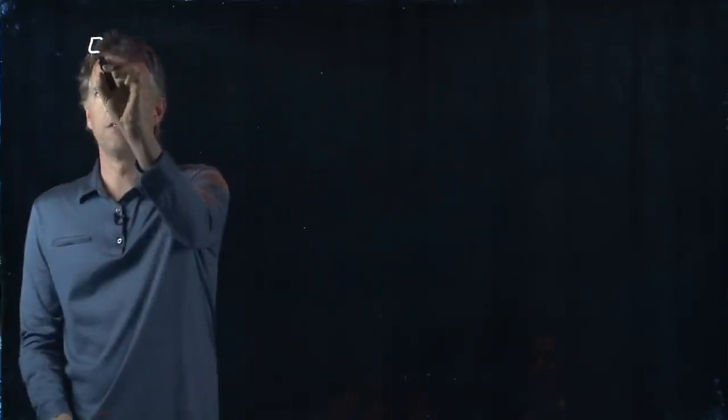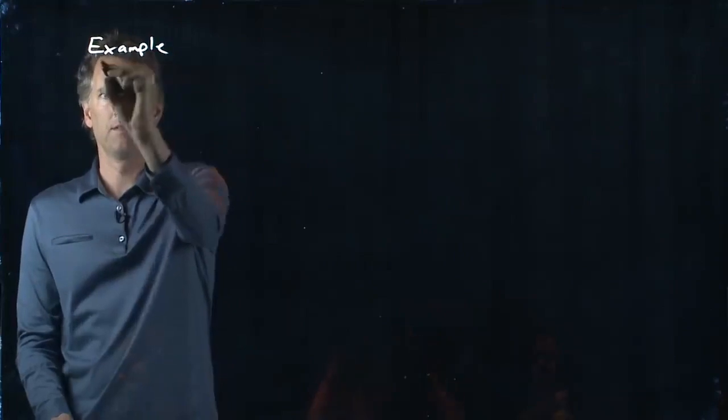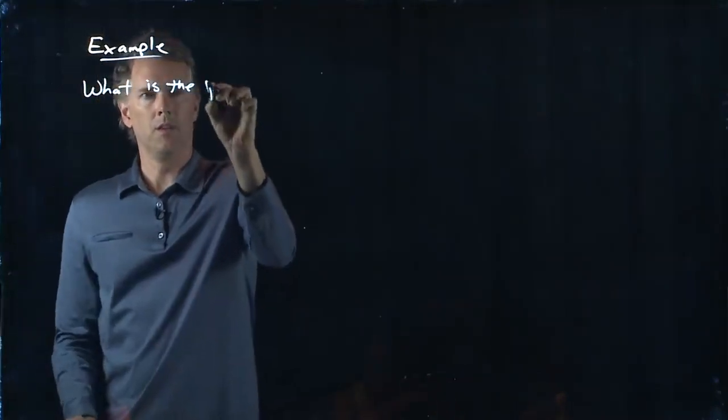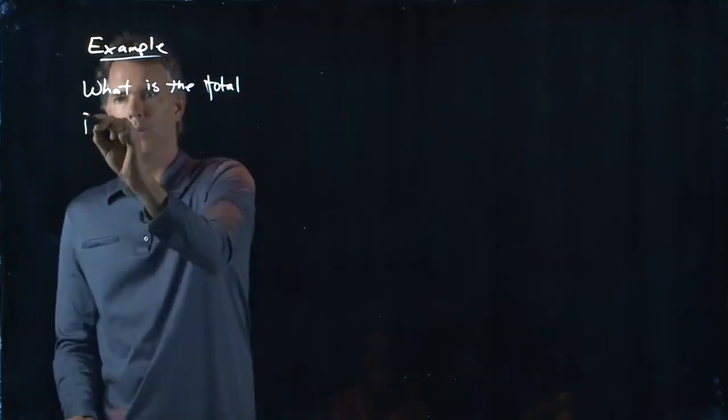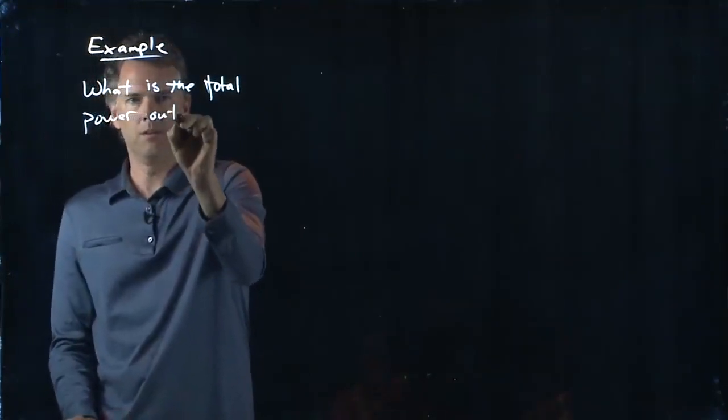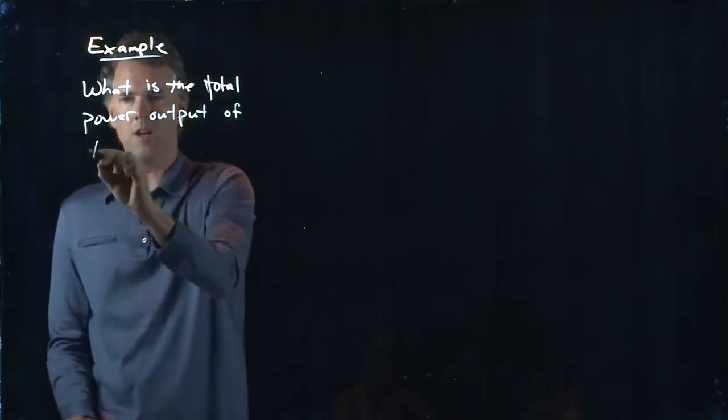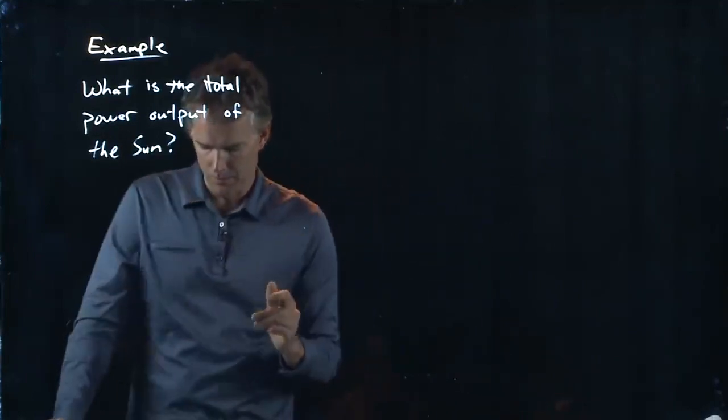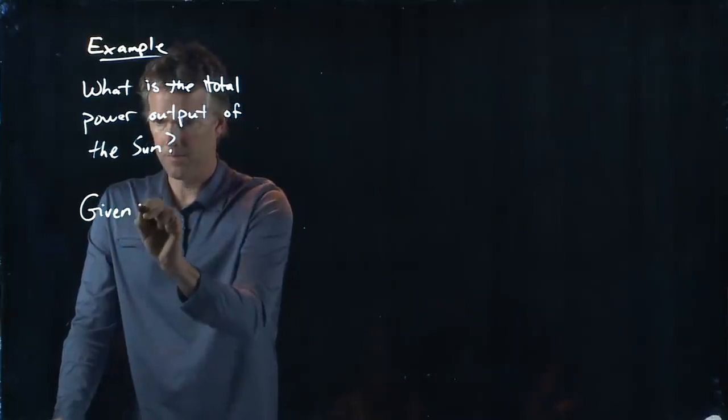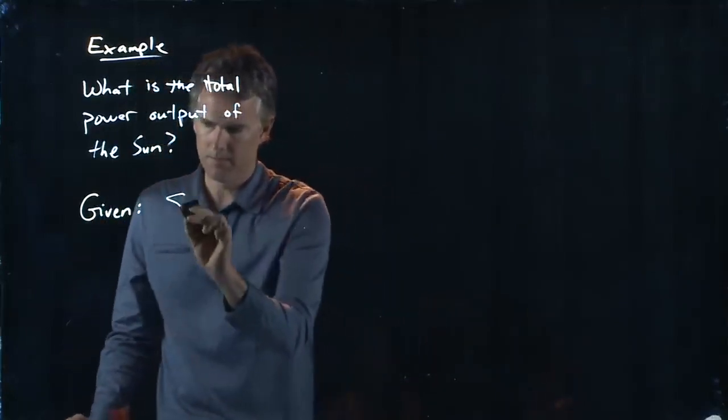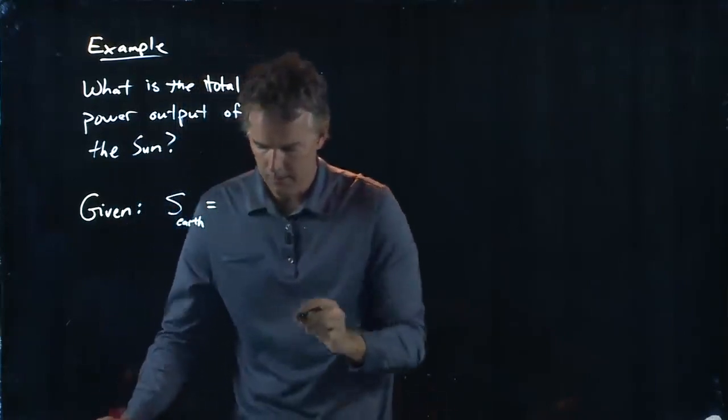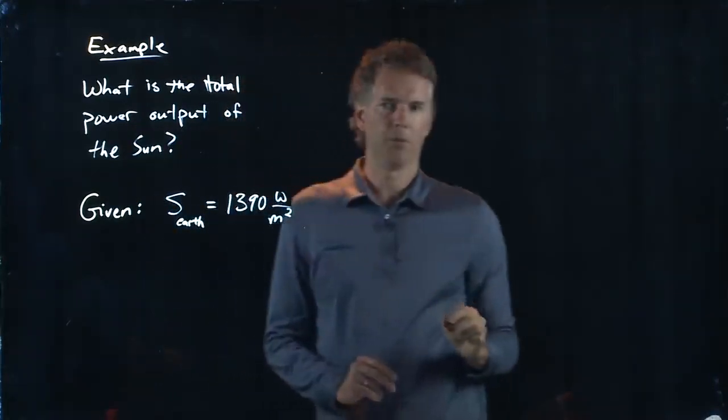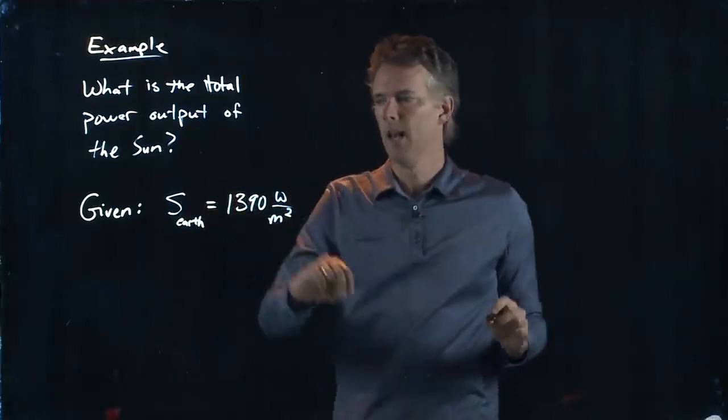Let's ask the following question: What is the total power output of the sun? And let's say that we know a couple things. We're going to say that the intensity at the Earth is equal to 1,390 watts per square meter. This is the intensity of the sunlight at the Earth.